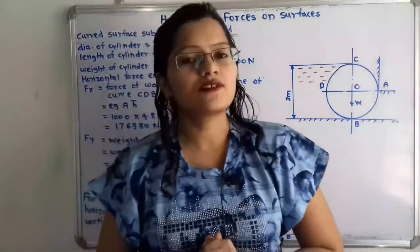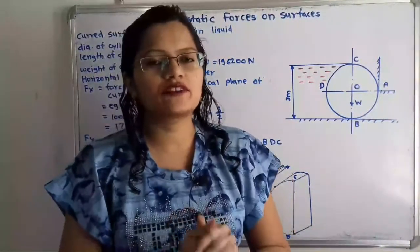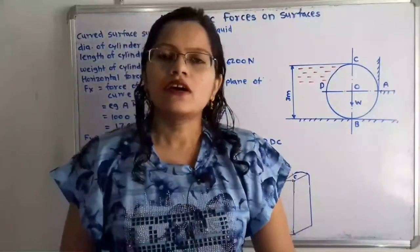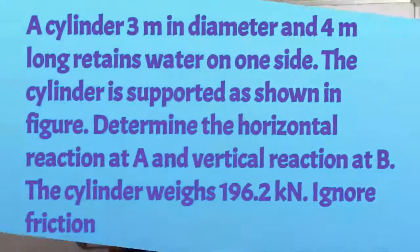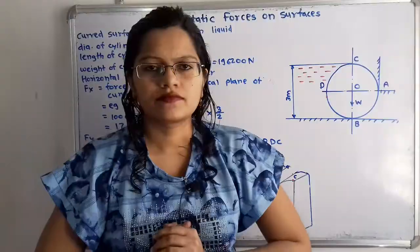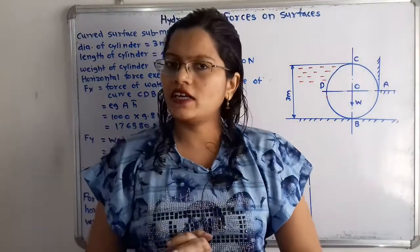Hello friends, this is Priyanka. Today we are going to solve a problem on hydrostatic forces on surfaces. We are going to solve a problem about a curved surface submerged in liquid. A cylinder 3 meter in diameter and 4 meter long retains water on one side. The cylinder is supported as shown in the figure. Determine the horizontal reaction at A and vertical reaction at B. The cylinder weighs 196.2 kilo Newton; ignore friction.